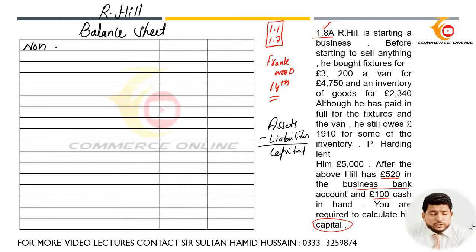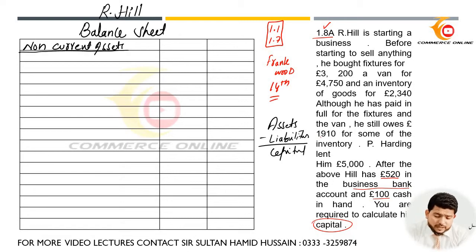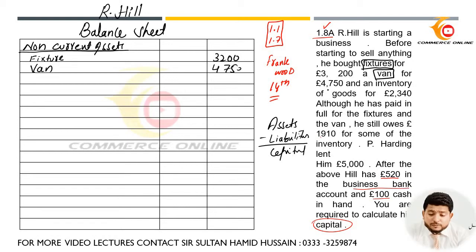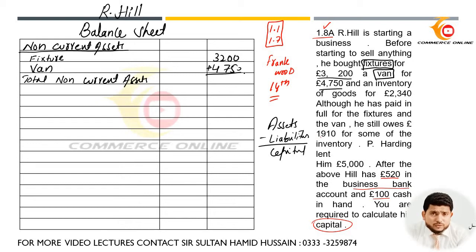First, you will write non-current assets. We need to calculate the amounts of non-current assets. Non-current assets are those assets which have a useful life of more than one year. Here, fixture is a non-current asset and van is also a non-current asset. So we have two non-current assets: Fixtures £3,200 and Van £4,750. Total non-current assets are £7,950.